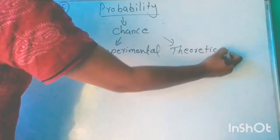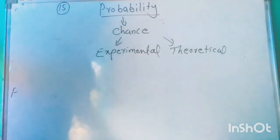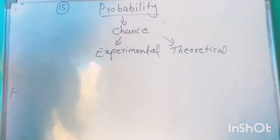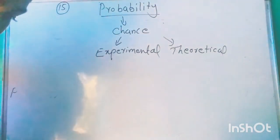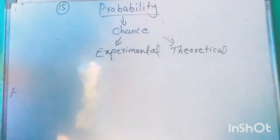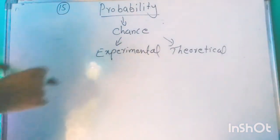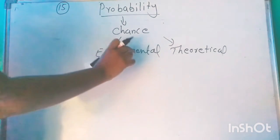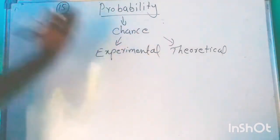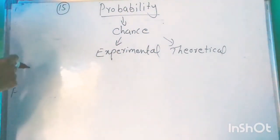Experimental probability was already discussed in the 9th standard. The second type is theoretical probability.